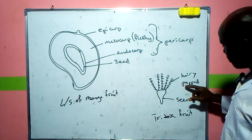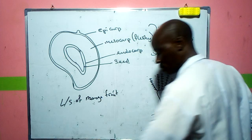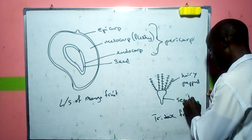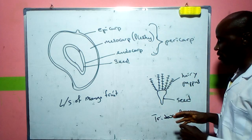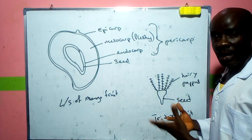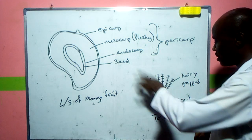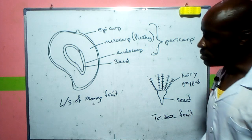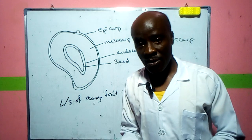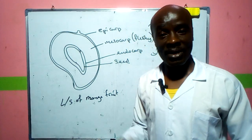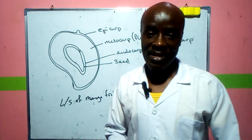For the Tridax fruit drawing, we have the hairy pappus and the seed. The pappus acts like a parachute, allowing the seed to be lifted and carried by the wind. That is where we will stop for today. Please subscribe if you haven't already, and leave any questions in the comments. Thank you for being part of the class.